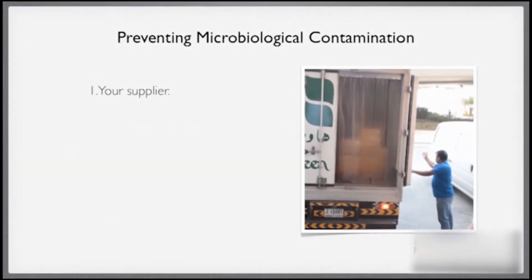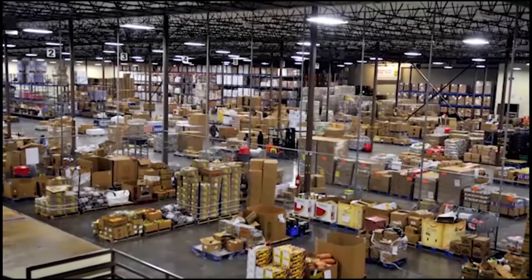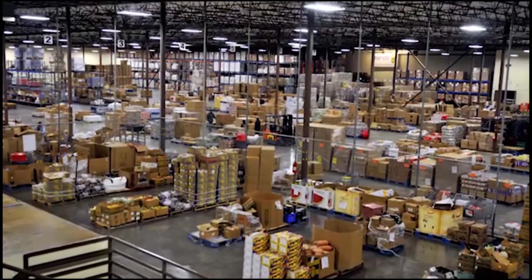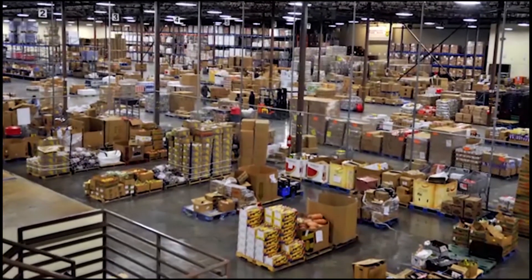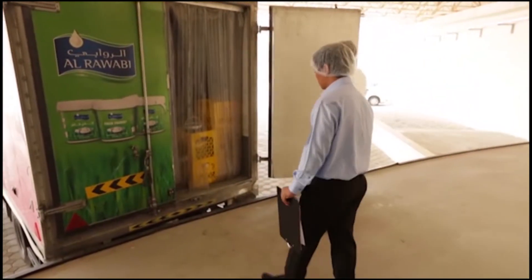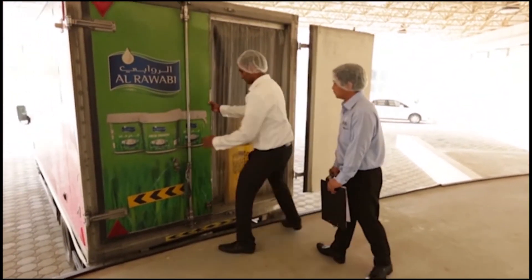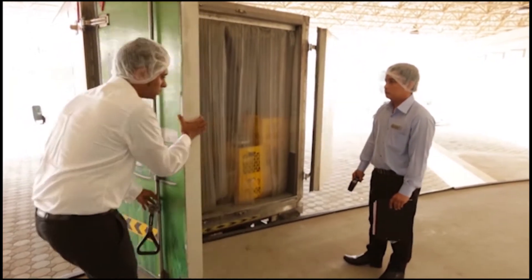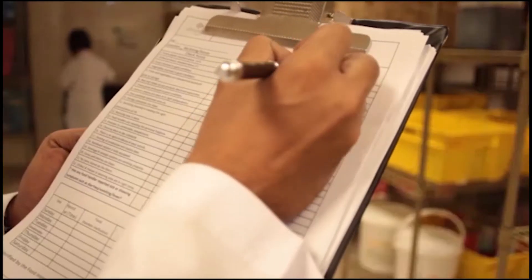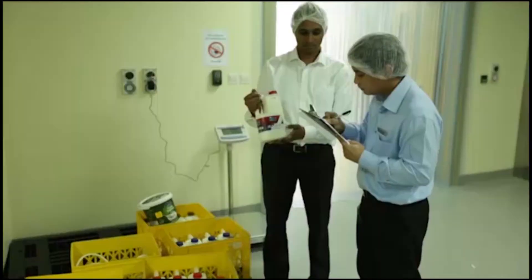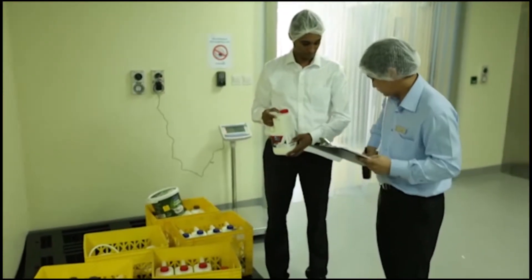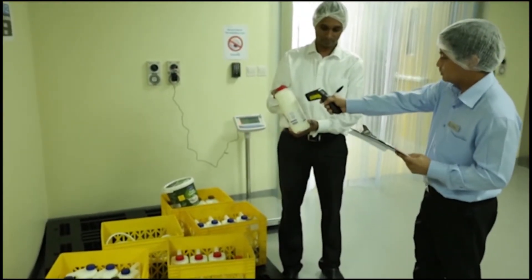Let's start with the supplier. To ensure that food is completely safe, you need to start at the source of the food, which in many cases is the supplier. No matter how cleanly you work, or how much you follow the correct procedures, if your supplier stores the food incorrectly, or if the food is exposed to cross-contamination, your food will already be infected before it even arrives at your kitchen.